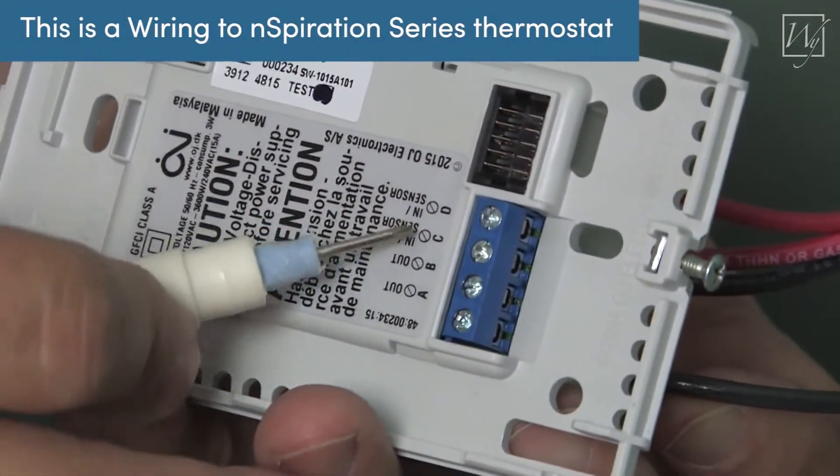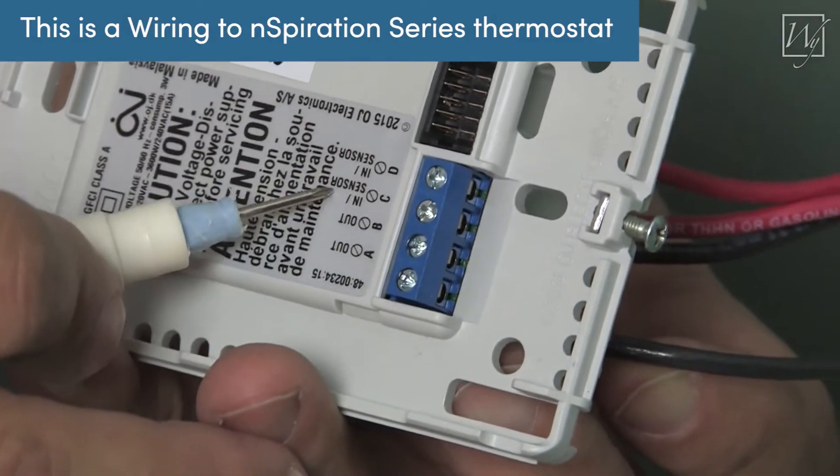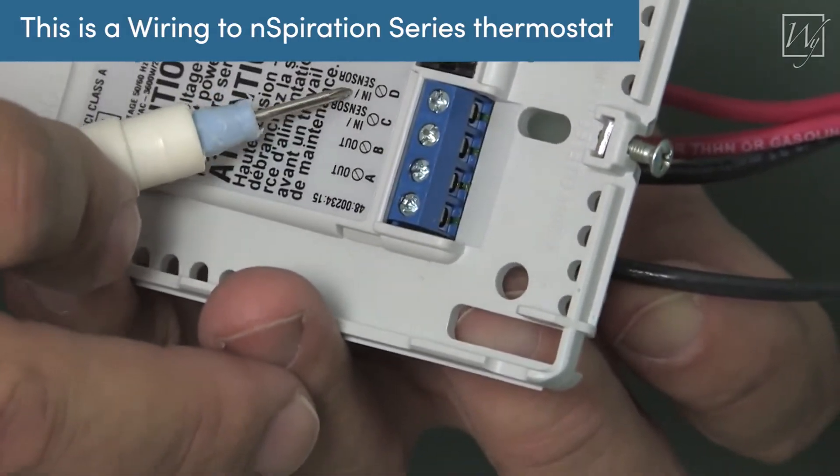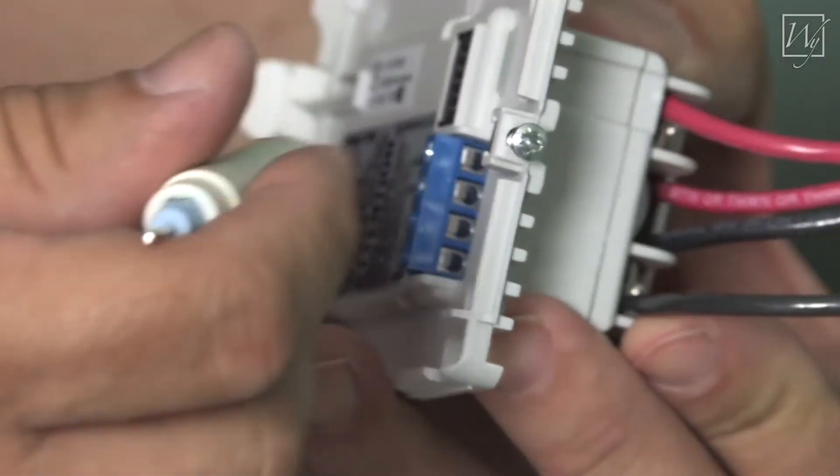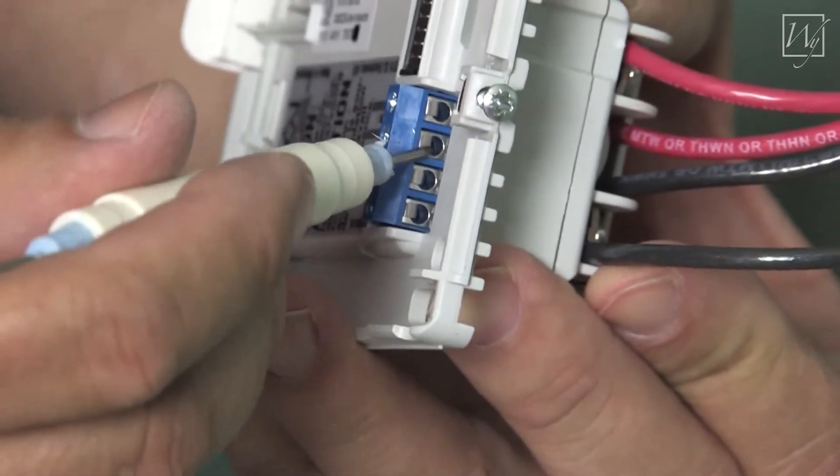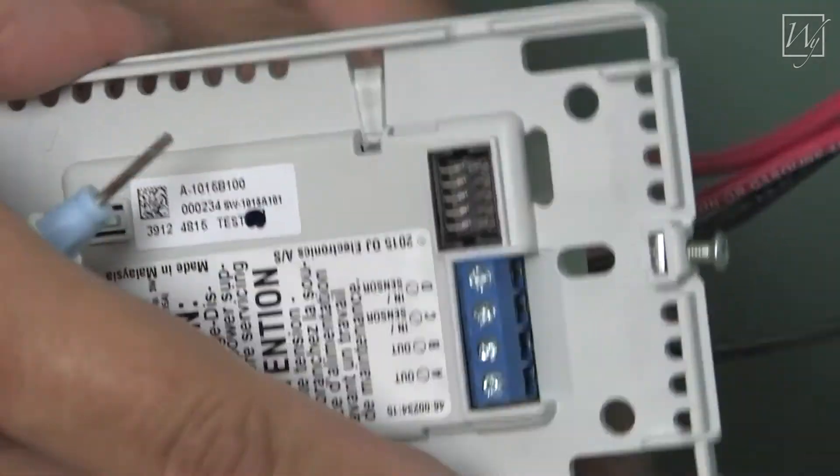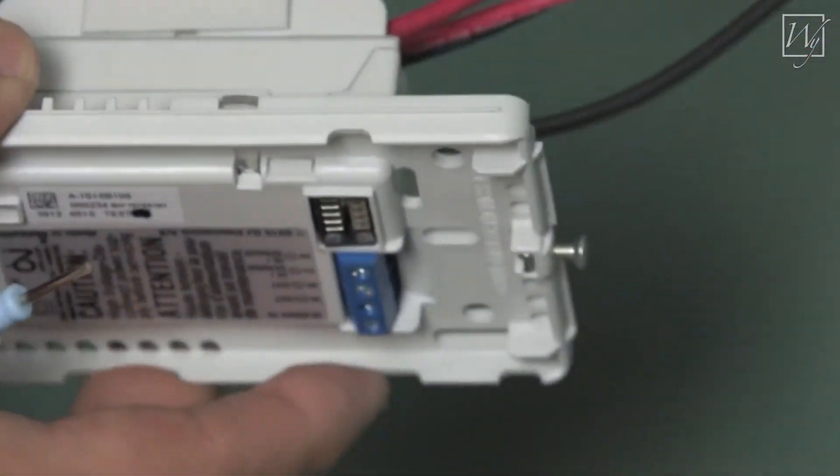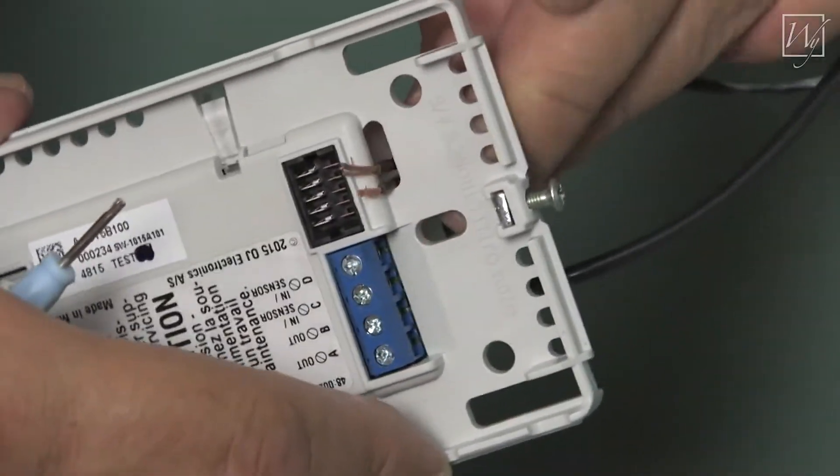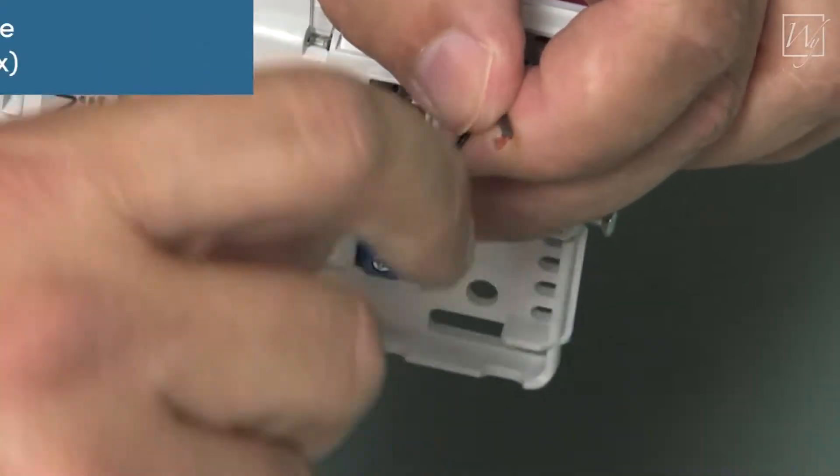Okay, we're going to make sure that we loosen up these screws for the sensor, and you can see that it's called out right on the base where the sensor wires are going to go, and they're going to go inside this blue terminal strip. So to do that, I need to get it through the base there.